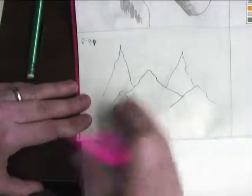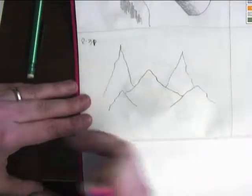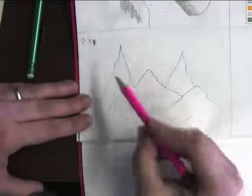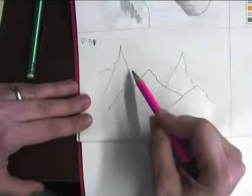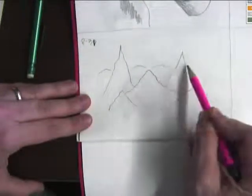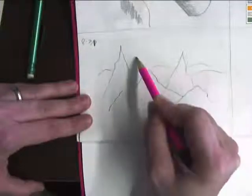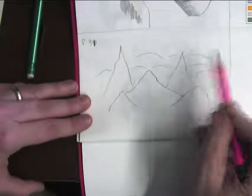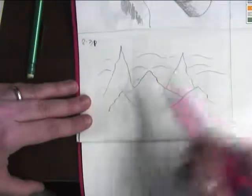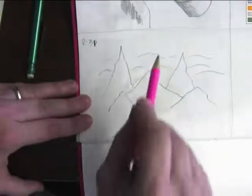So basically we've got our tall mountains that are coming towards us, but we want to put some further back, so what we're going to do is just do some hills, kind of in the background, far back, just some lines kind of curving over to show that this is close and this is farther away.